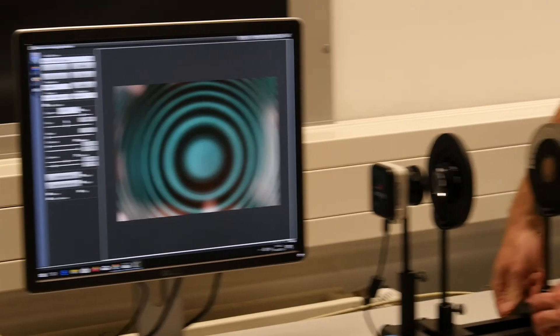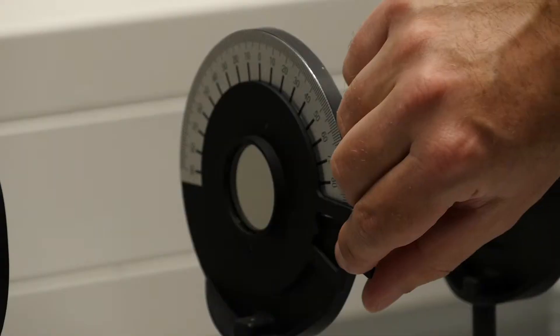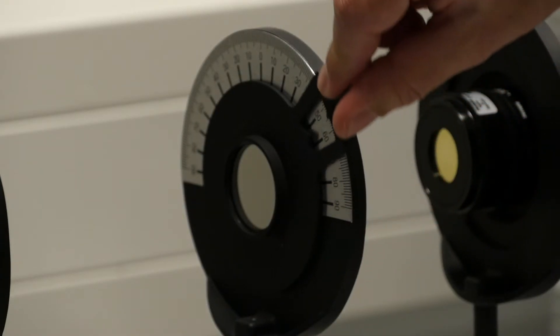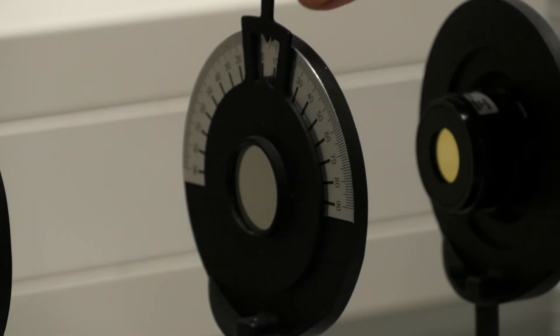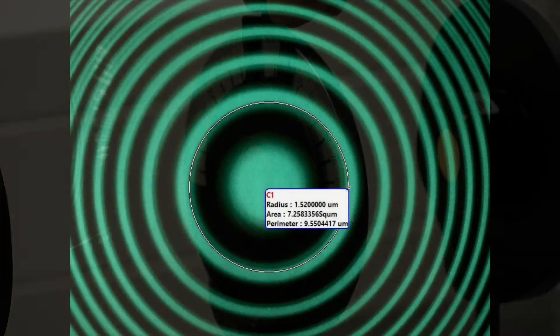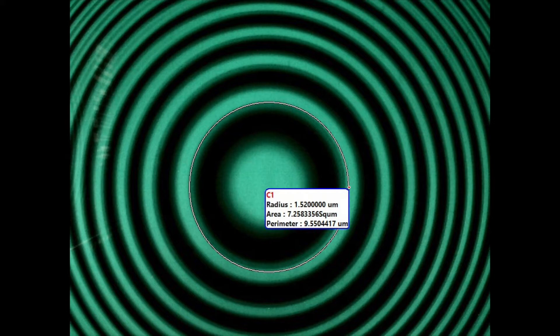Measure the interference rings and the radii in the same way as for the normal Zeeman effect. You should now observe a splitting of 9 rings.